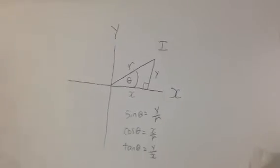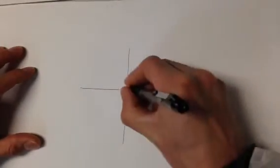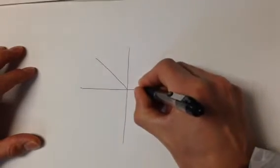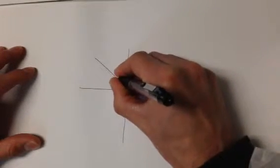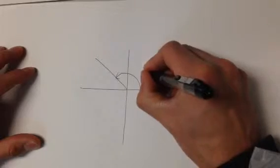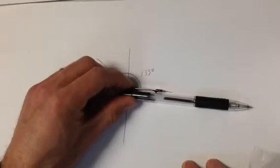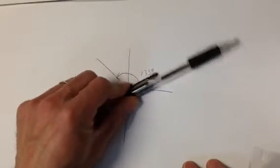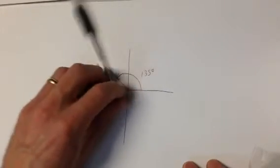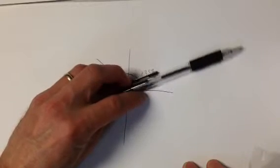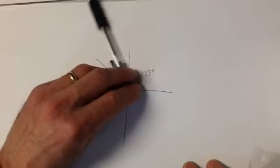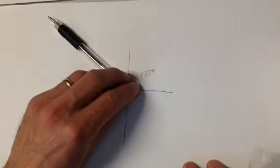The advantage of doing this is it allows us to deal with a case where our angle is greater than 90 degrees. Consider this angle here. It's 135 degrees. Starting again, we always start at the positive side of the x-axis, and we rotate counterclockwise. So starting here, we rotate 135 degrees counterclockwise to arrive here.